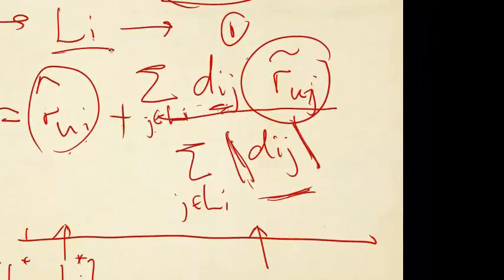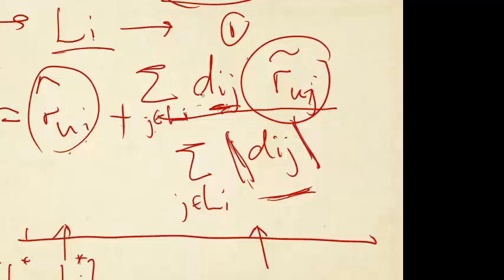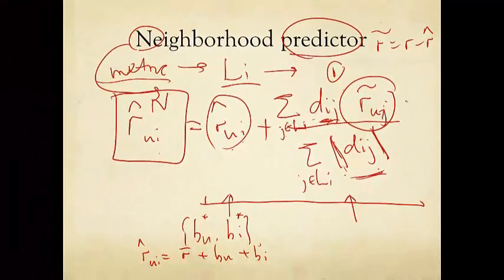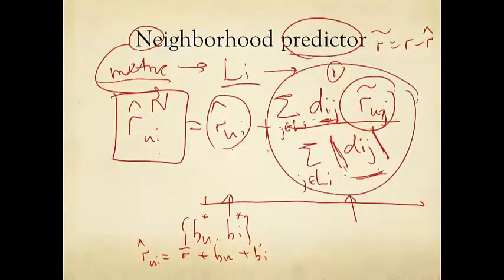And then, based on that, we say all those movies j in that neighborhood set will be weighted with a certain weight, for example, the dij themselves, and then normalized. This is the total influence in the prediction of UI.